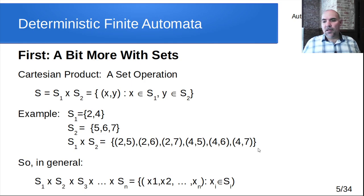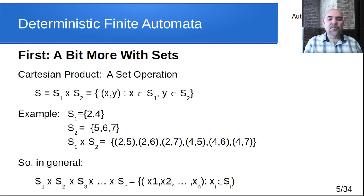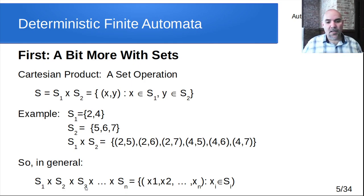Notice it's kind of like concatenation, but it produces pairs rather than cramming symbols together like language concatenation does. In general, you can cross any number of sets together — instead of pairs you get triplets, quadruplets, or however many you want. Each item in the tuple comes from the corresponding set, and every possible combination is included in the result.